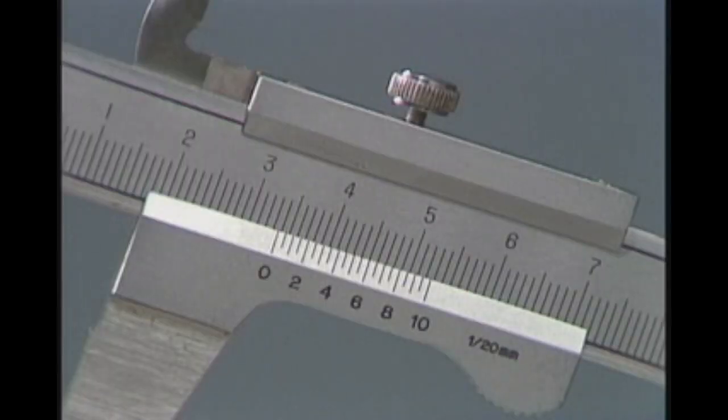Let's say that after measuring an object, the positions of the caliper body and the vernier were like this.